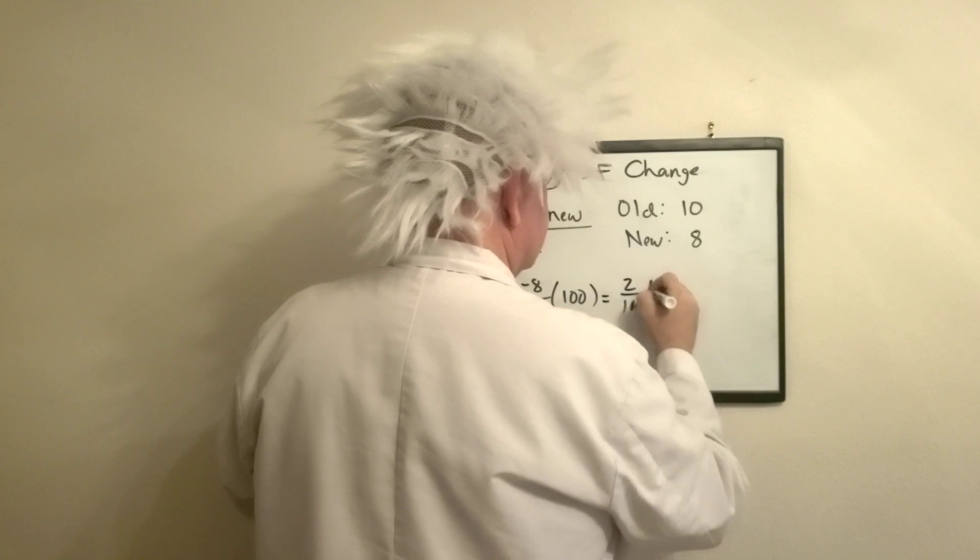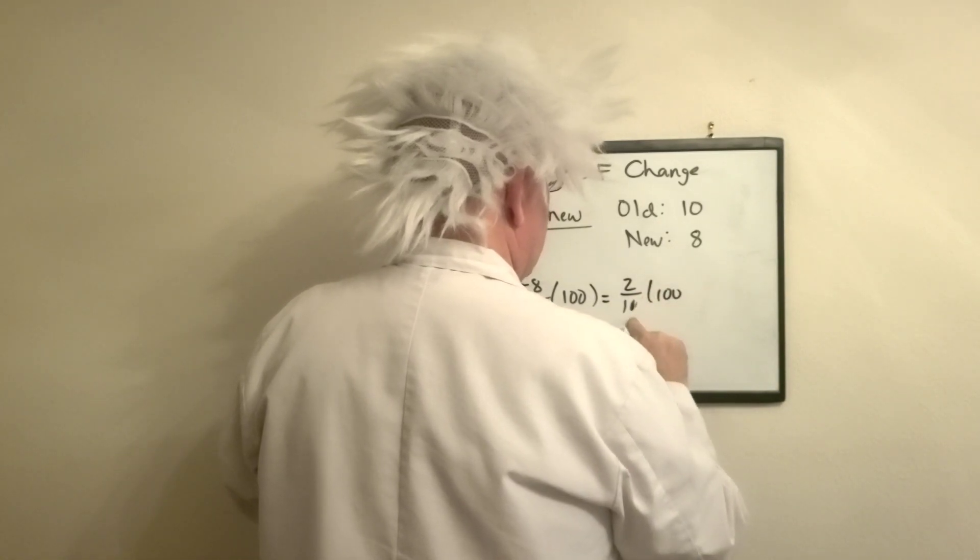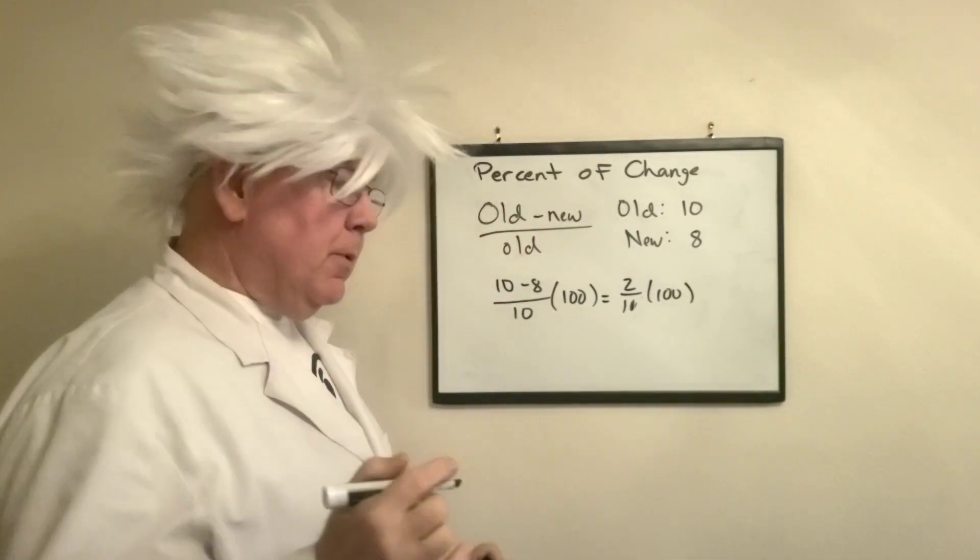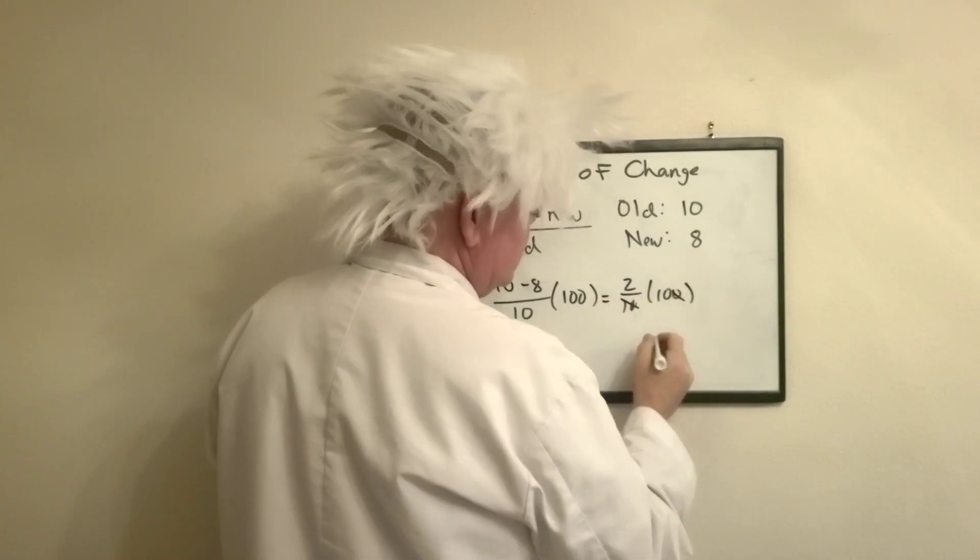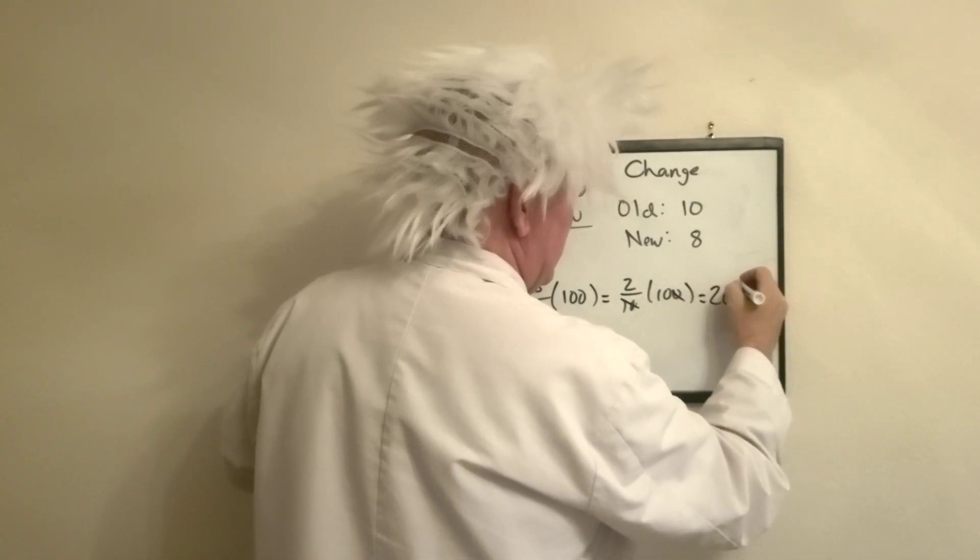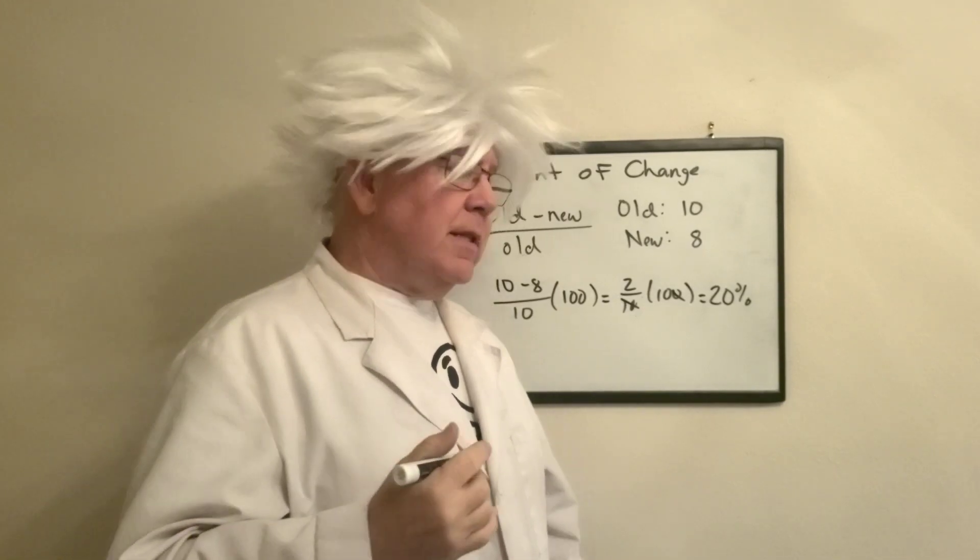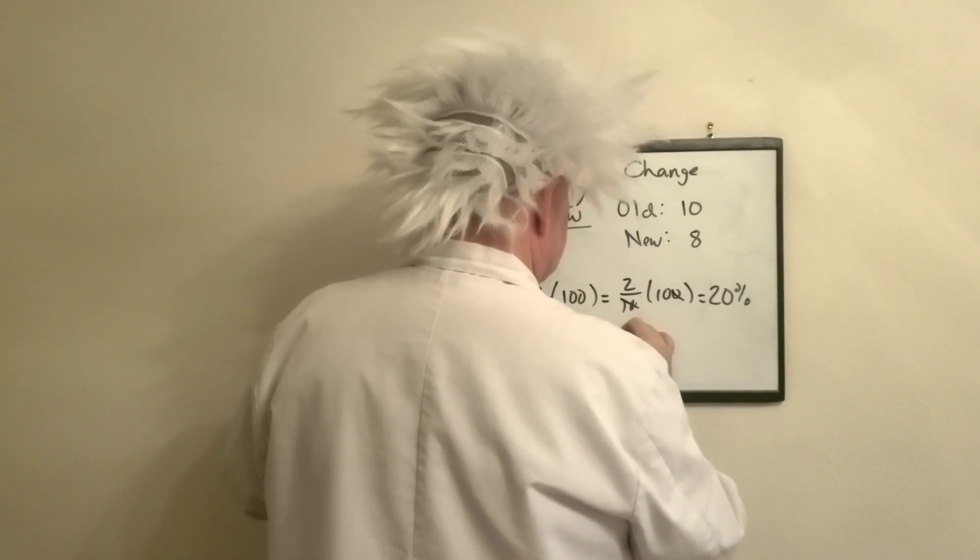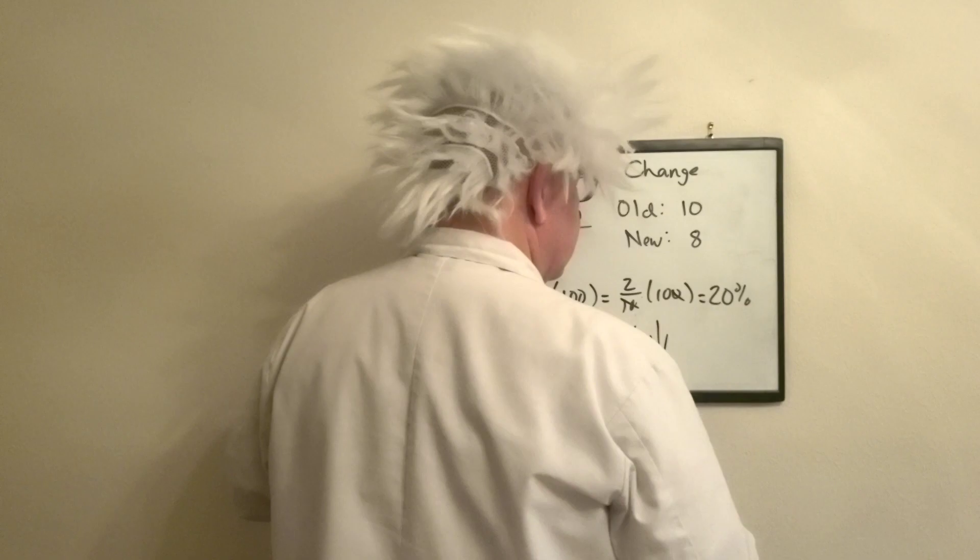So 10 minus 8 over 10 is 2 over 10, excuse me, 2 over 10 times 100. Next thing I'm going to do, I'm going to knock out a zero, and that's going to be 20%. Because the new is less than the old, this is going to be a 20% decrease.